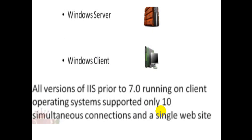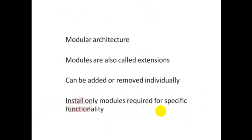Now with version 7.0 you can create websites and there are options to enhance the user limit, which is much better compared to the older version. IIS 7 has a modular architecture — modules also known as extensions — for security and better reliability. You can add and remove individual features, and you can also install any modules required for specific functionality.